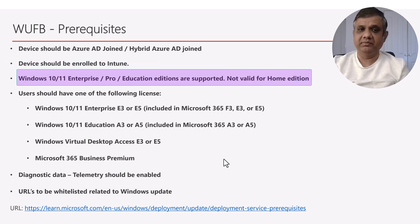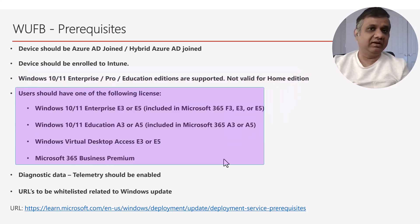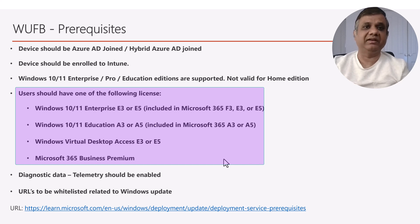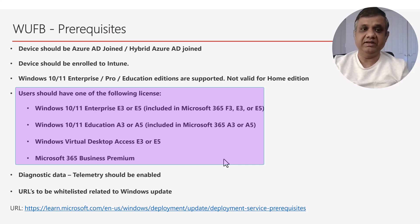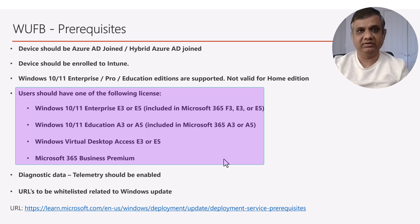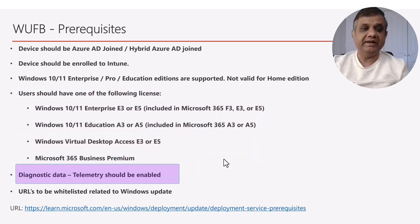As covered previously, Windows Update for Business is only supported for Windows 10/11 Enterprise, Professional, and Education — not for the Home edition. There is also a specific license requirement. Just enrolling your device in Intune or joining Azure AD is not enough. You need one of the following licenses: Windows 10/11 Enterprise E3 or E5, Windows 10/11 Education A3 or A5, Windows Virtual Desktop Access E3 or E5, or Microsoft 365 Business Premium.